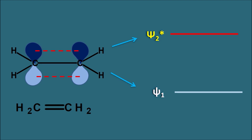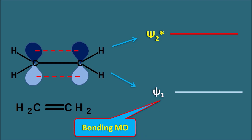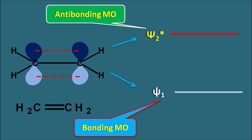Whenever ethene forms molecular orbitals, it forms two types: one can be called the bonding molecular orbital and the second can be called the anti-bonding molecular orbital. In a simple way, the bonding molecular orbital is the ground state and the anti-bonding molecular orbital is the excited state.